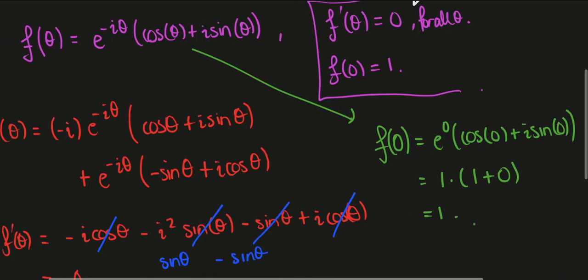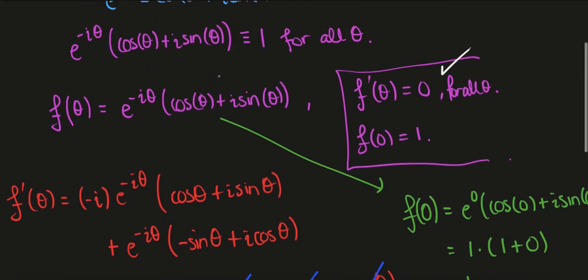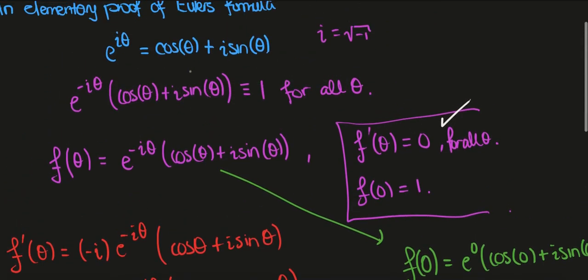So what we've shown is that if we consider the function e to the minus i theta times cos theta plus i sine theta, which again is Euler's formula, well it's the function you obtain from Euler's formula when you divide by e to the i theta, we showed that it had a constant derivative, the derivative was 0 and therefore constant, and that was true for all values of theta